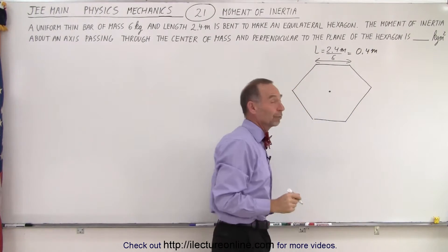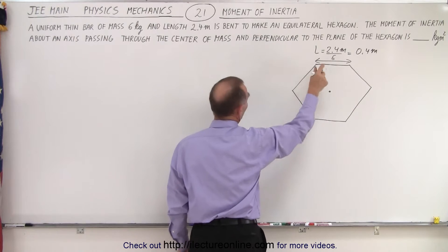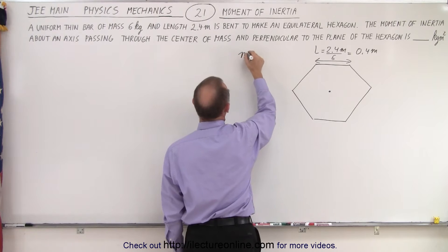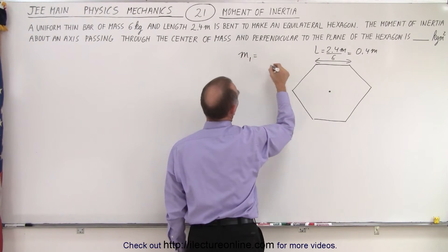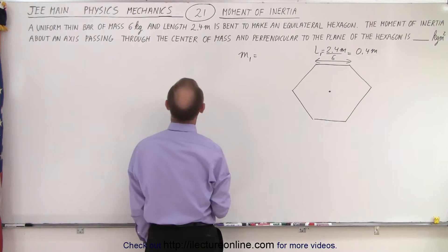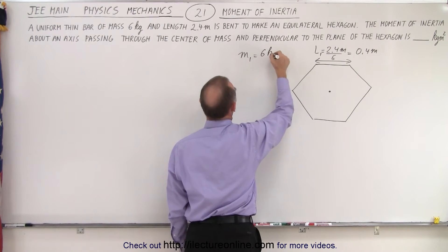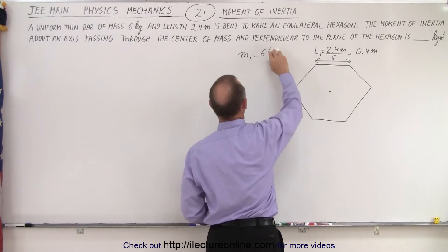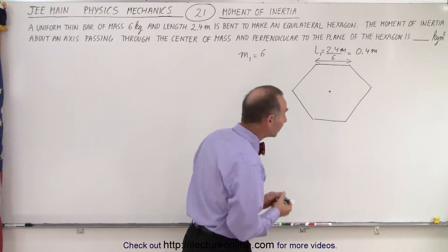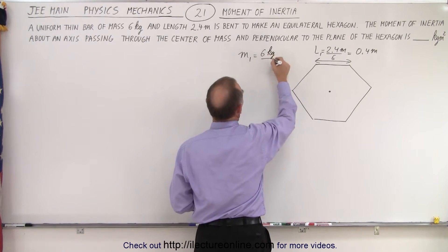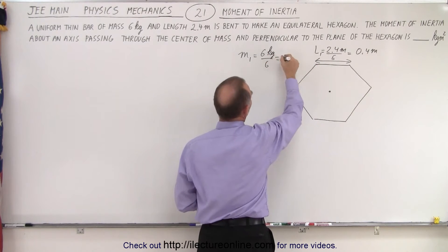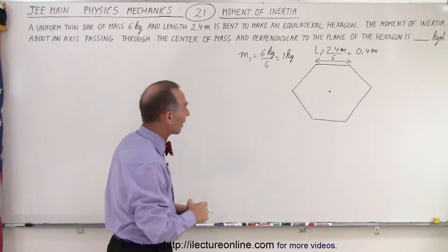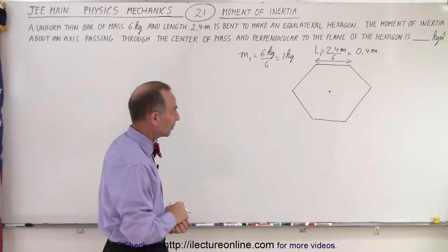So the length of each bar is 0.4 meters and the mass of each side, or each part of the bar I should say, so for each side of the hexagon, the mass for one side of the hexagon and the length for one side of the hexagon would be equal to 6 kilograms divided by 6, because there's six sides, that would be equal to 1 kilogram. So the mass of each side of the hexagon is 1 kilogram, the length of each side is 0.4 meters.